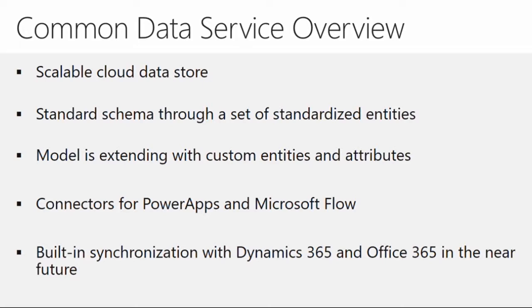When integrating those two applications, you'll encounter scenarios where you need something to unify the different GUIDs associated with records so you can uniquely identify each one. That's where the Common Data Service comes in — it lets you create a standard schema set that incorporates elements from multiple storage capacities, like AX and Dynamics 365, into one linking table you can push and receive information from through automation like Flow.